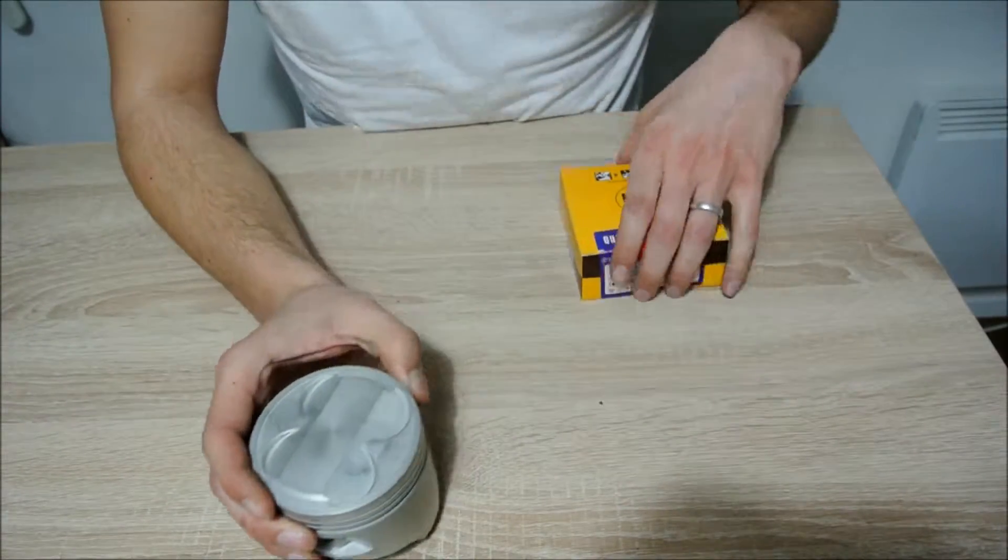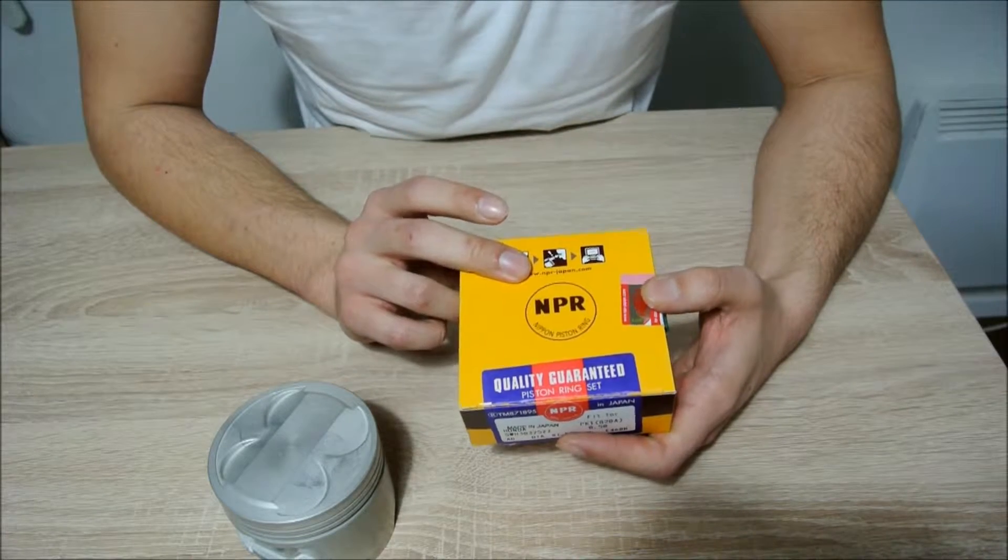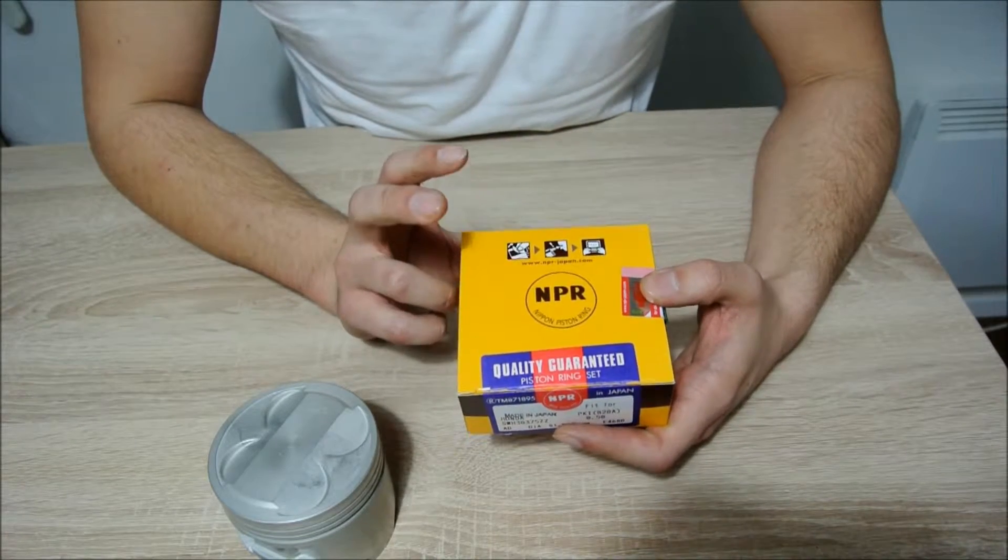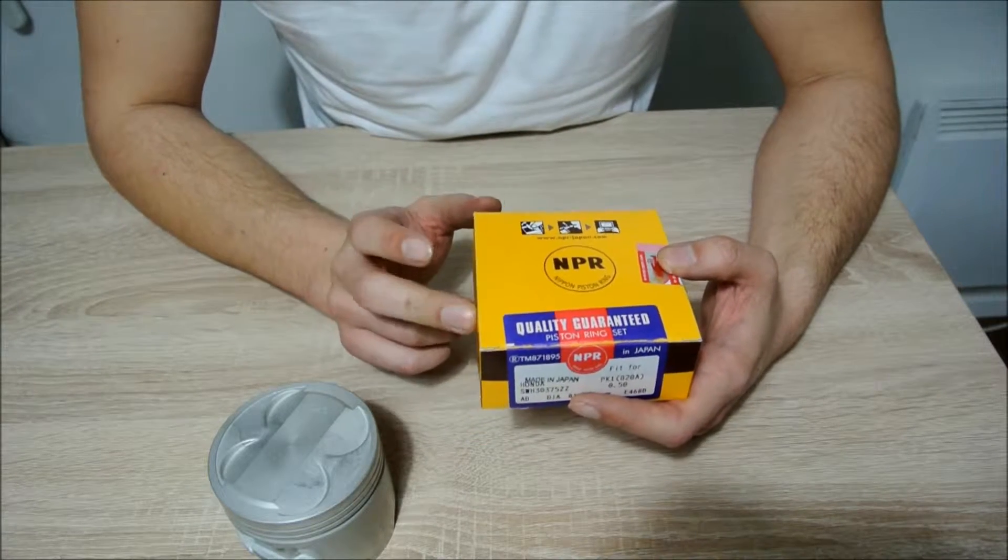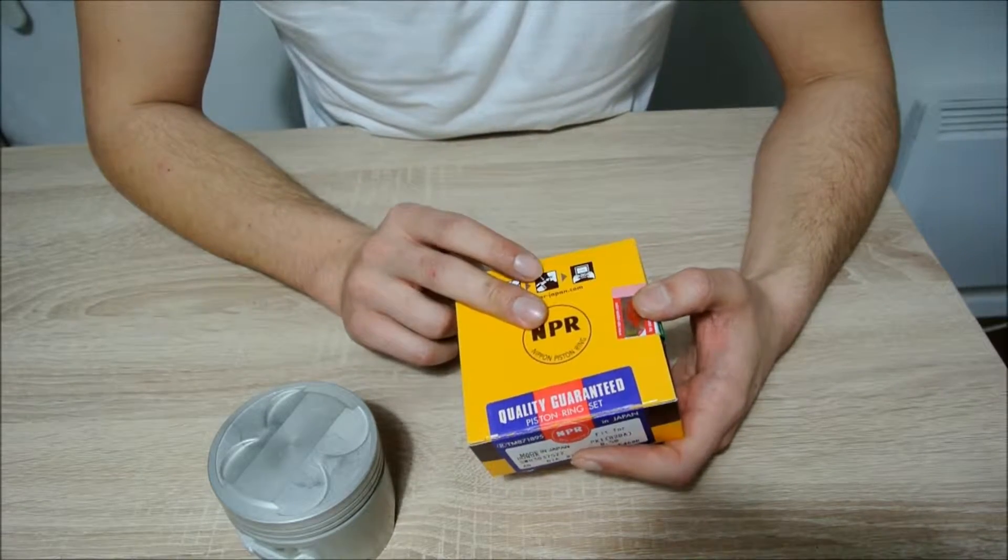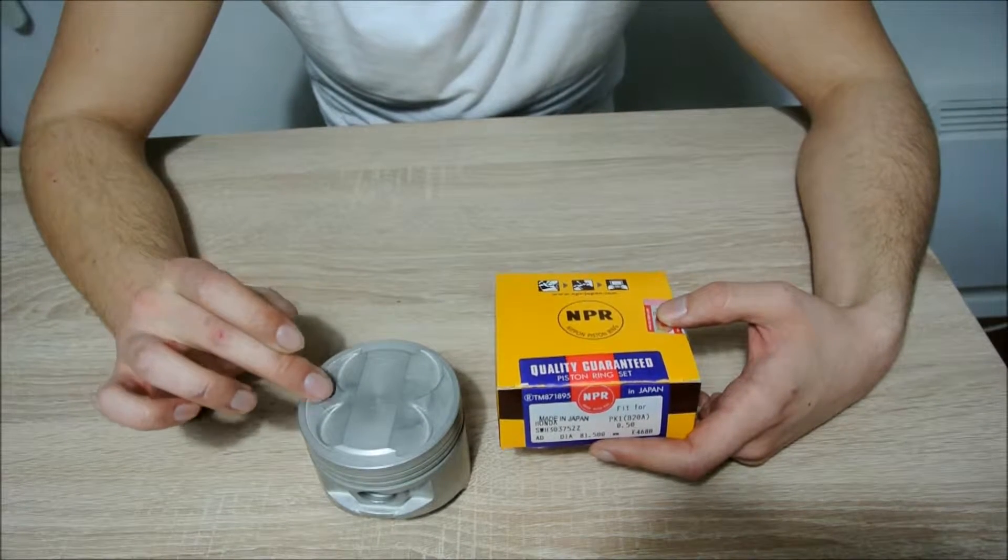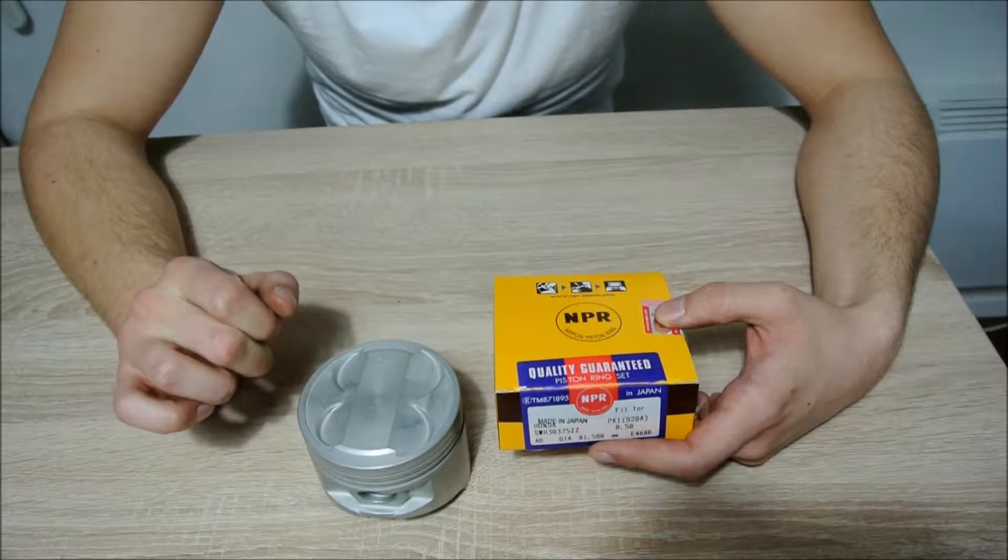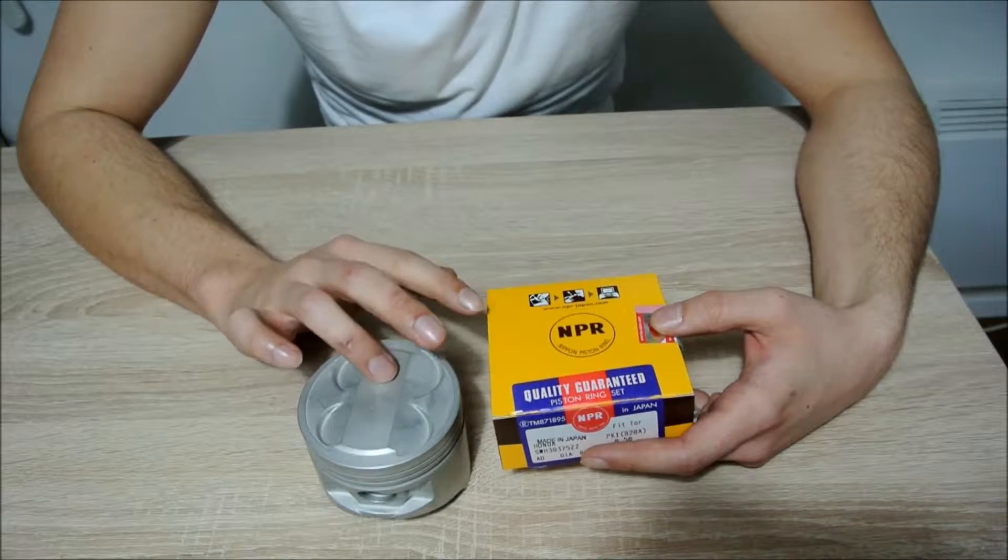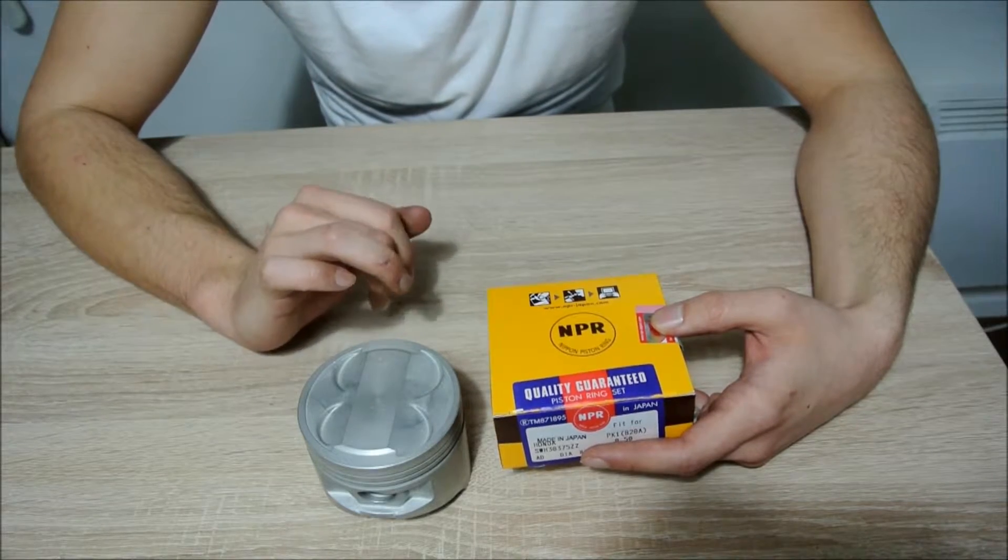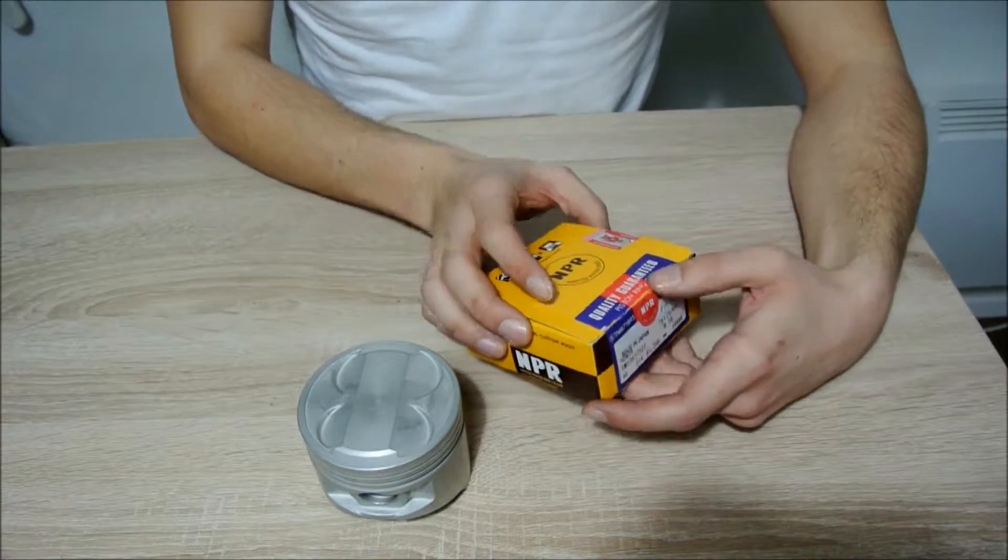This particular piston ring set fits the Honda Prelude 2.0L 16 valve engine. How come you can use this piston ring set on a piston from a 1.6 liter engine? The fact is that these engines have the same bore, both are 81mm bore, but the Honda engine has a longer stroke. The piston ring set is basically the same and is interchangeable.